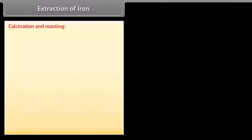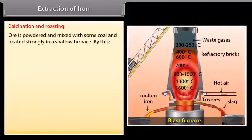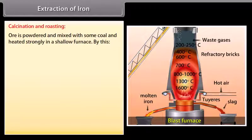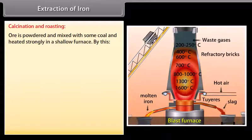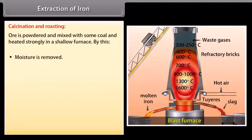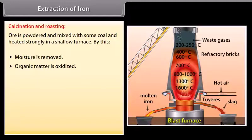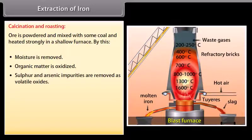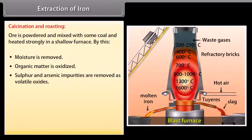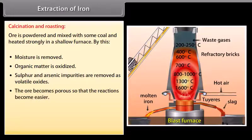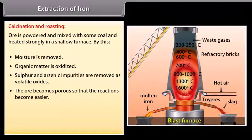Calcination and roasting. Ore is powdered and mixed with some coal and heated strongly in a shallow furnace. By this, moisture is removed, organic matter is oxidized, sulfur and arsenic impurities are removed as volatile oxides, and the ore becomes porous so that the reactions become easier.